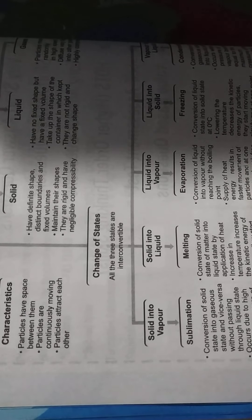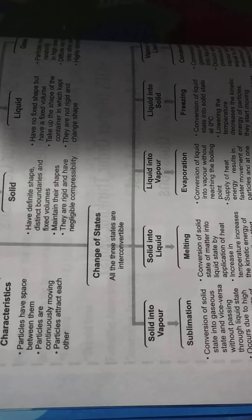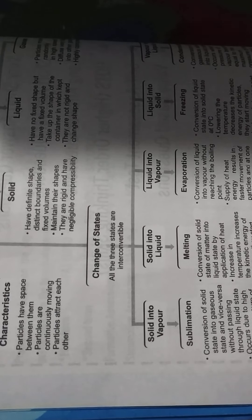What is melting? Conversion of the solid state of matter into liquid state by application of heat is called melting. Increase in temperature increases the kinetic energy of the particles; they start moving freely and at one point change into liquid state. The temperature at which a solid melts to become a liquid at atmospheric pressure is called its melting point.